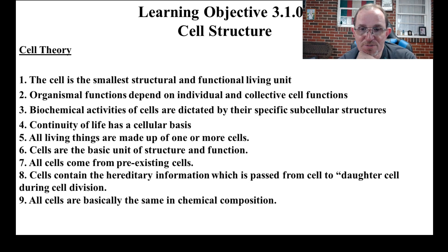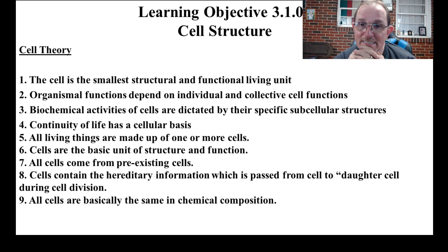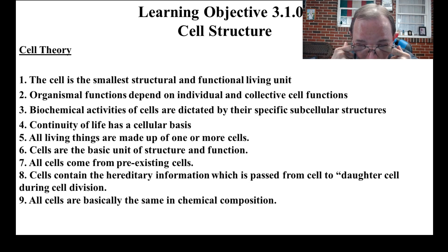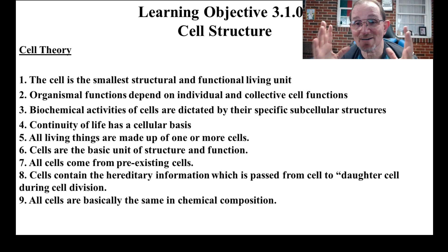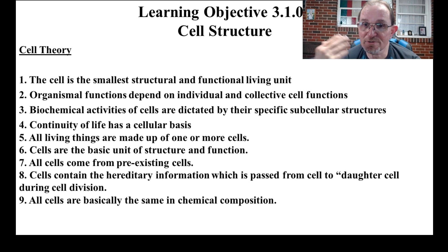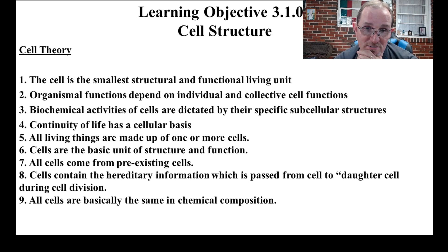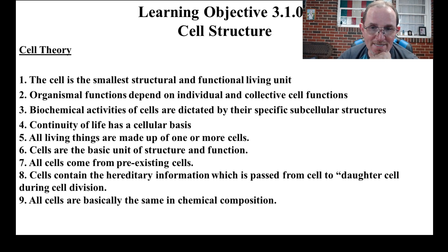Cells contain the hereditary information which is passed from cell to daughter cell during cell division. What they're referring to is our DNA — the code book that determines how tall we are, what eye color we have. All of these things are programmed into our DNA. We get that from our parents. We might get something that our parent doesn't have but that they received from their parent. All cells are basically the same chemical composition and basically do the same things, but there are some special specifications.